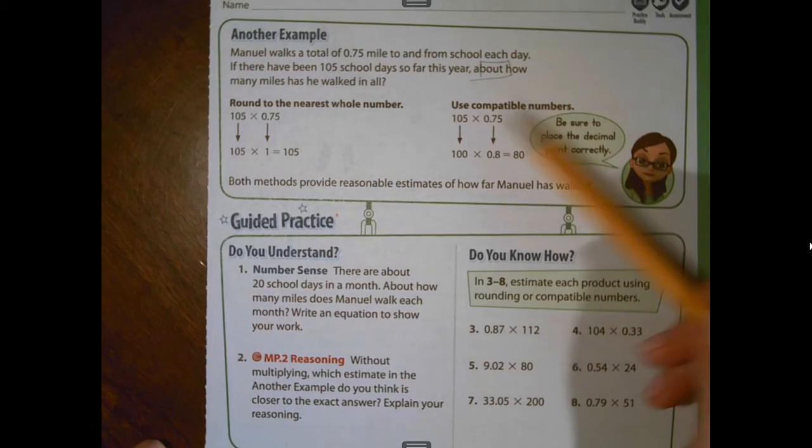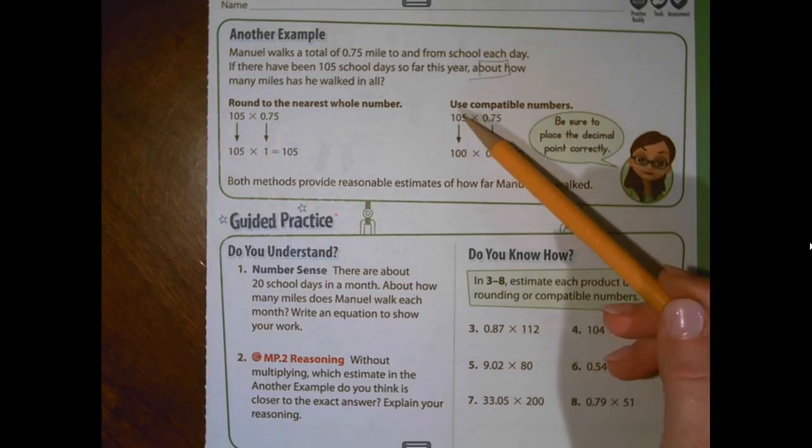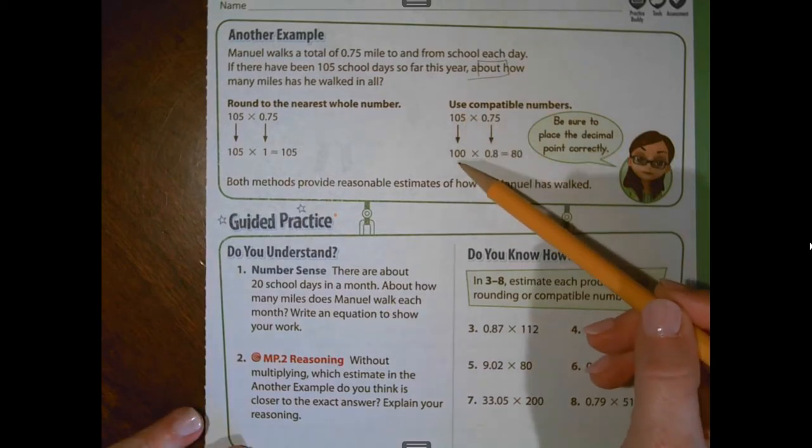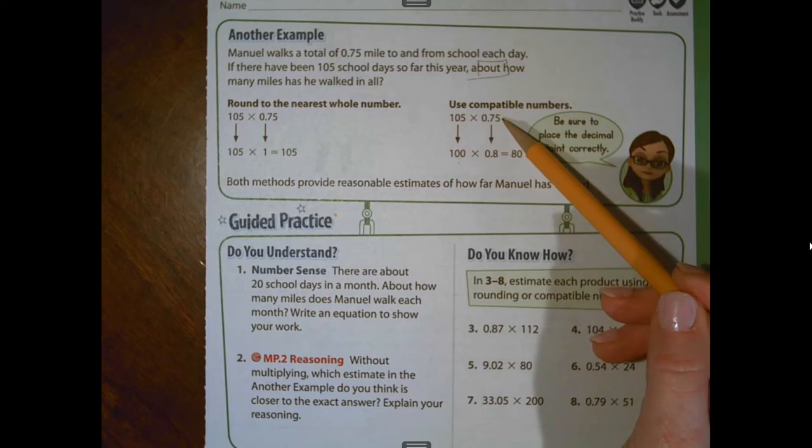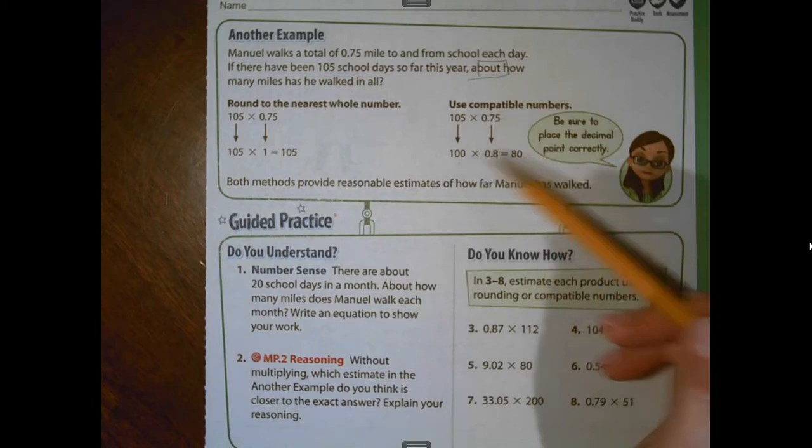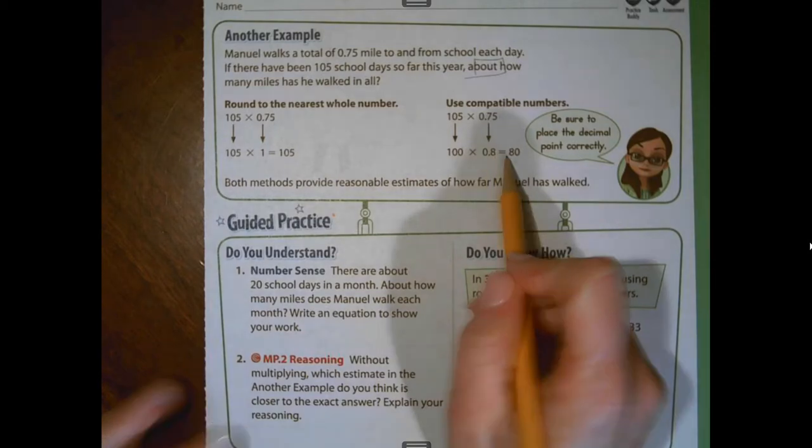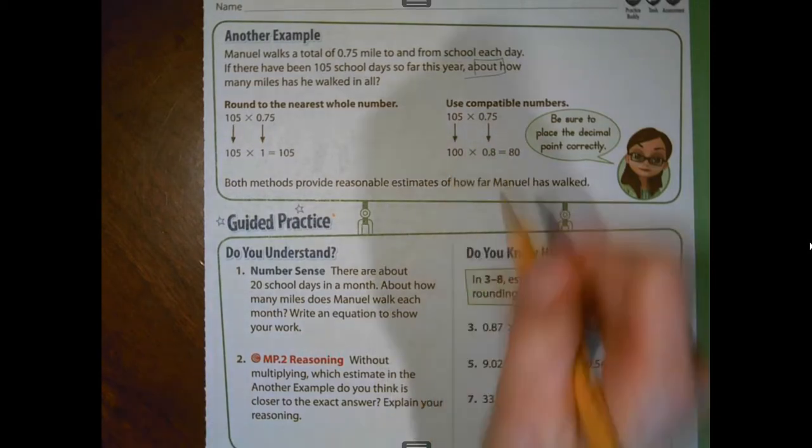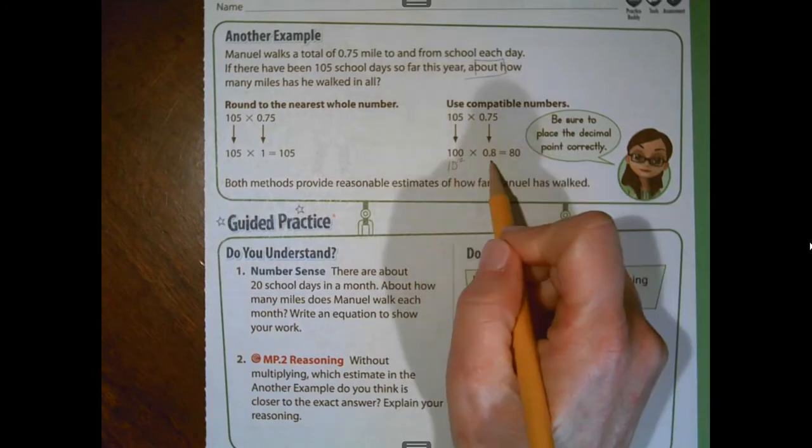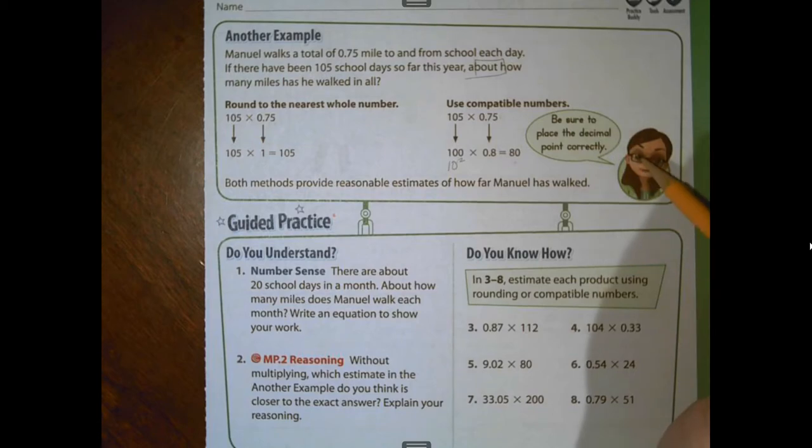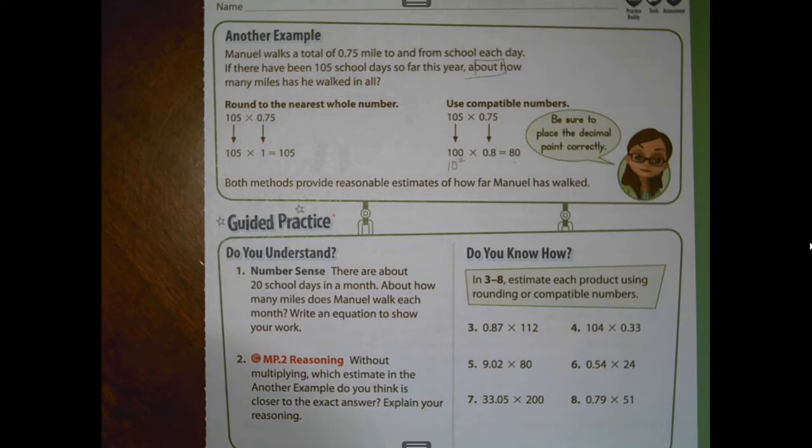Using rounding, we're going to leave 105 this whole number. We're going to round the decimal to the nearest whole number. One times 105 is 105. So the estimate is 105 miles. Now, using compatible numbers, you know, 100s are easier to count by in your head than 105. So if you have 100 here for this factor and you round this factor to the nearest tenth, eight tenths times 100 give you 80. And we learned how to multiply yesterday, we would have moved this decimal two places to the right to multiply by a power of 10. So the little girl's even reminding you, be sure to place the decimal point correctly.